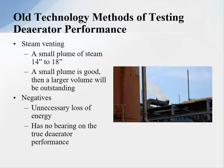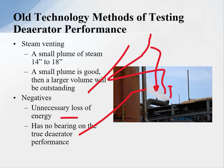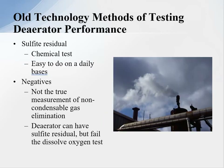Old technology methods for testing deaerator performance always said to look for 14 to 18 inches of a plume — a small plume is good, while a larger volume would be outstanding but represents significant energy loss. In reality, the venting has no bearing on true deaerator performance. We could have a tremendous velocity going out and it really has no bearing on deaerator performance.